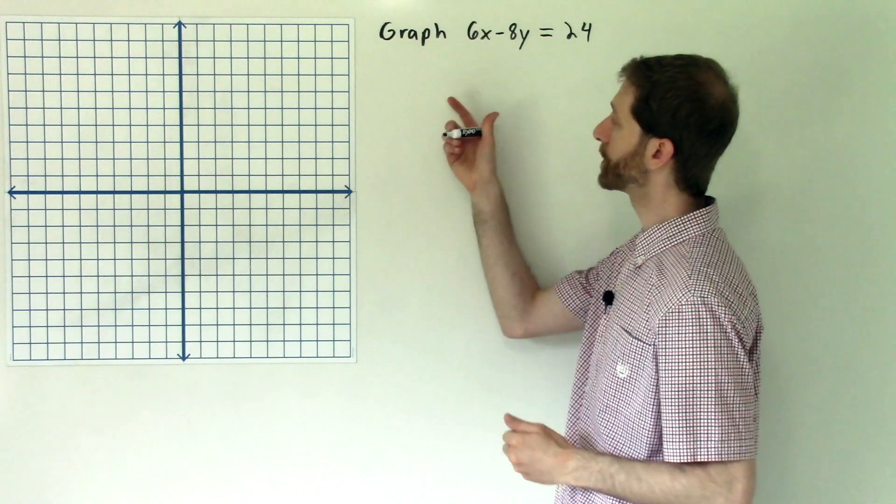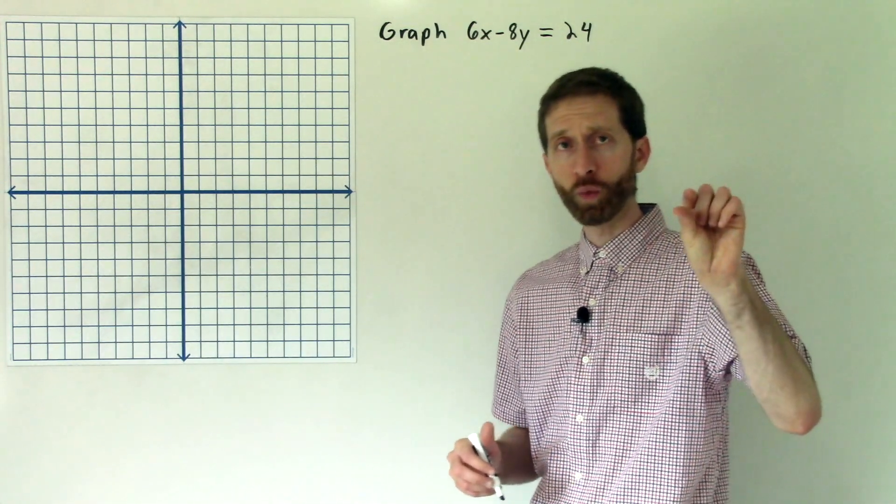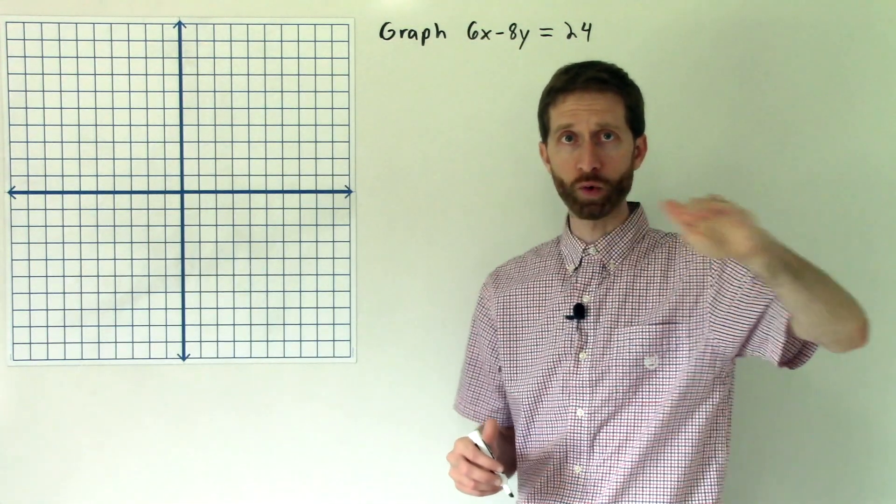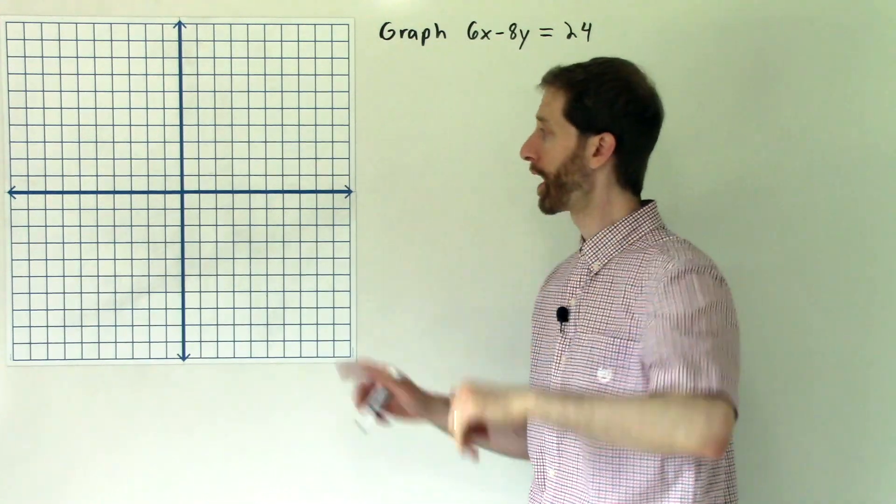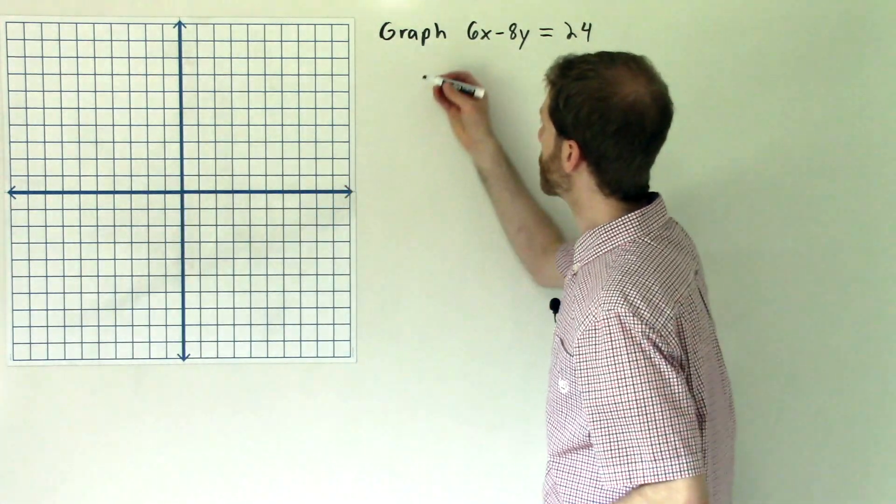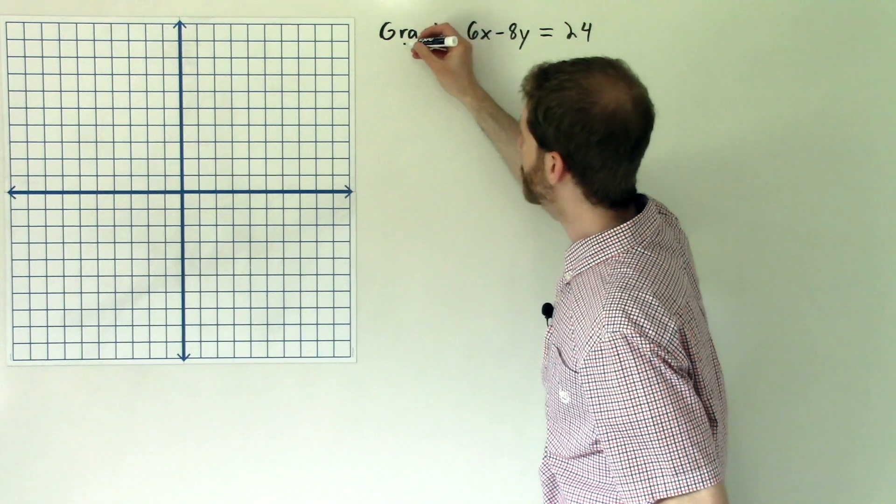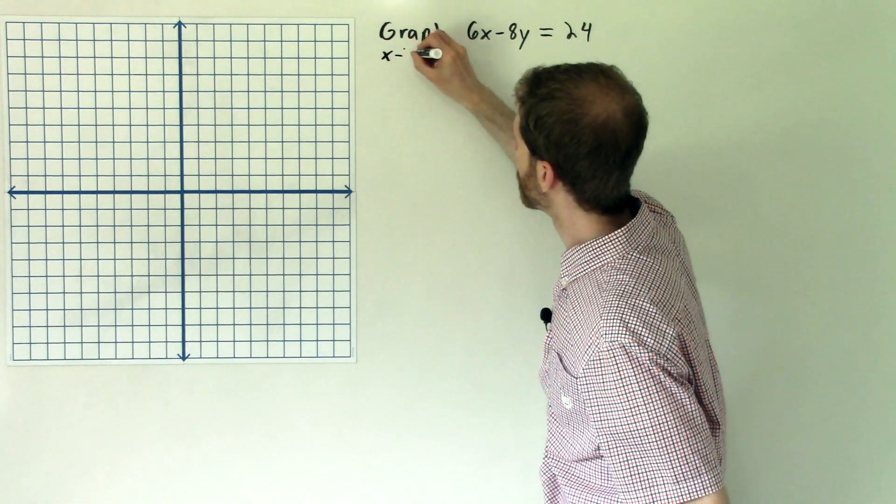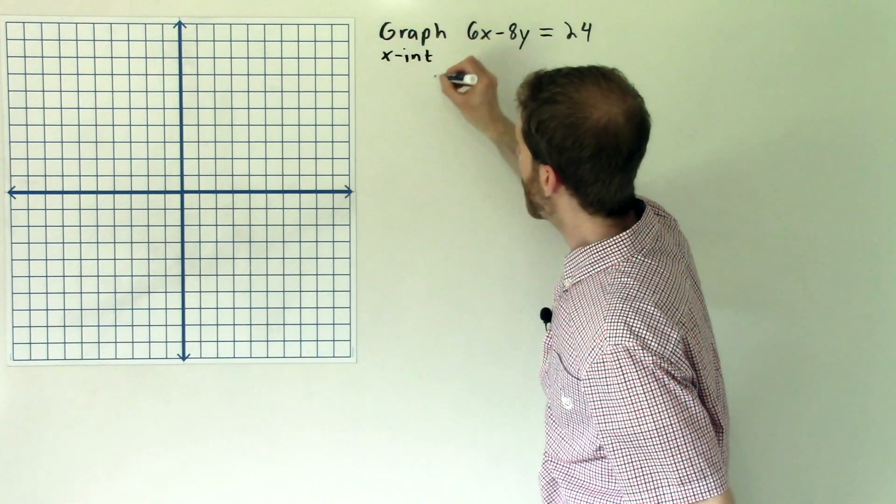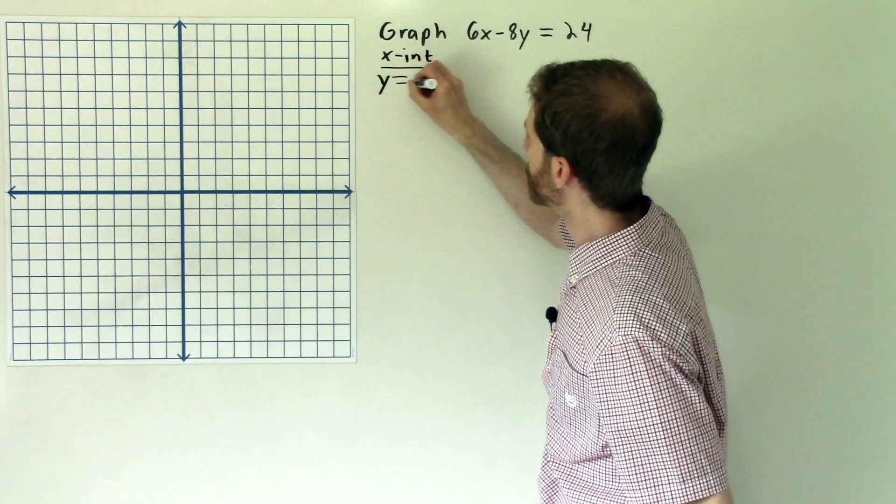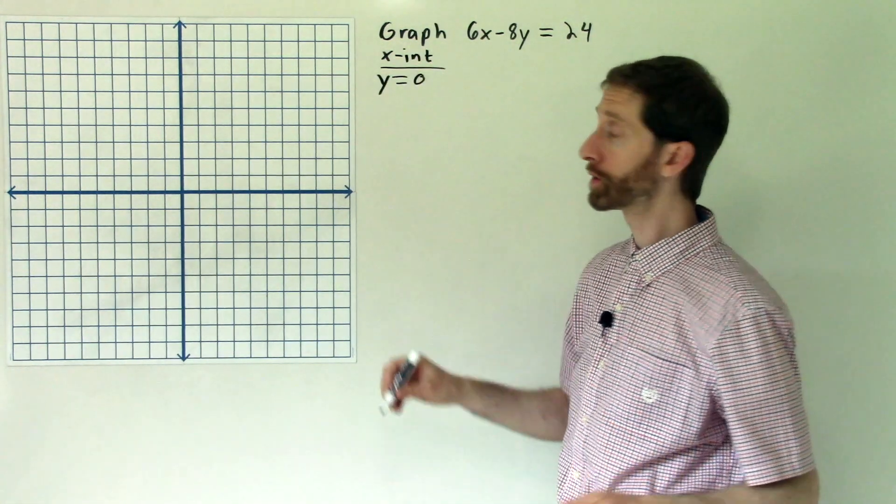So recall that to find the x-intercept you are finding where y is equal to zero. We're finding where we cross the x-axis which is where y is zero. That's all along here. So we'll find the x-intercept first, and that is going to be where y is equal to zero. So I plug y equal to zero in.